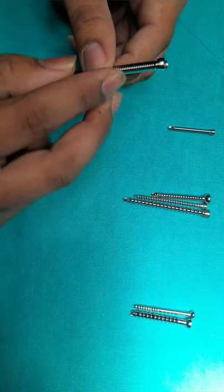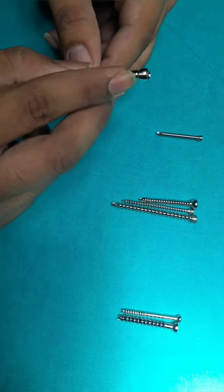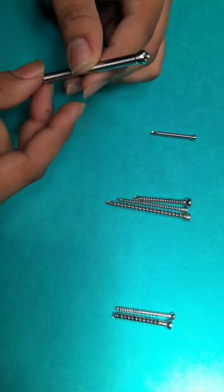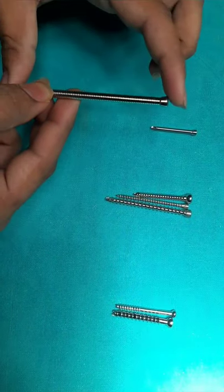Cortical screws have two types of head: this is the locking head and the other is the simple head. Cortical screw size varies according to the bone.